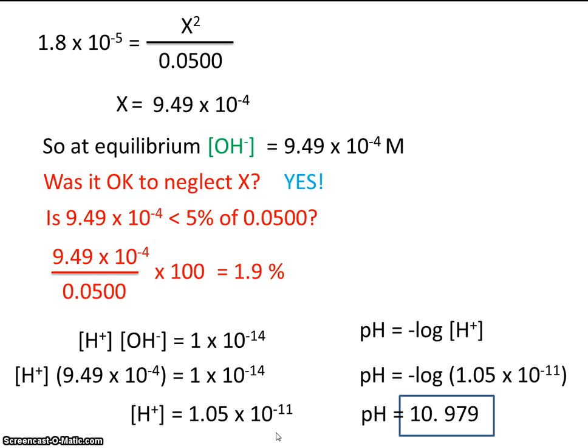So remember, for all of the weak acid and base calculations, it's necessary to set up an ice table. And then neglect x in the denominator. And then solve for x. And the x will either be your concentration of hydrogen ion or your concentration of hydroxide ion.